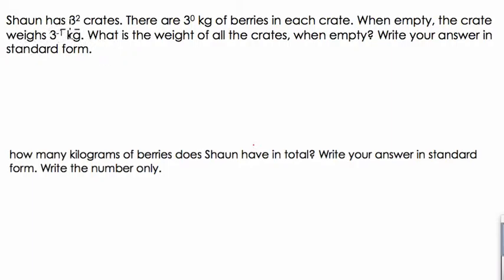Alright, so I noticed that Sean has 3 to the second crates. The first thing I'm going to do is rewrite 3 to the second as 9. I feel like that's going to make this problem a little bit more manageable. So Sean has 9 crates. And maybe I'll write over here as a record, we have 3 to the second crates, which of course equals 9 crates.